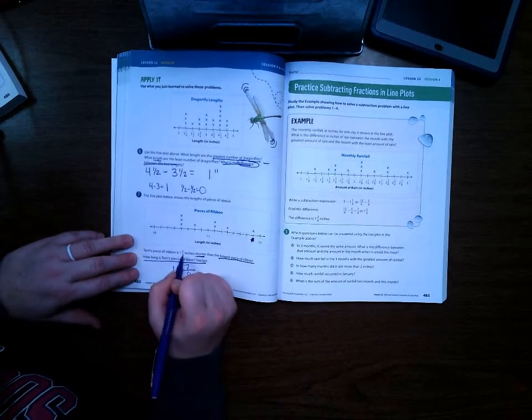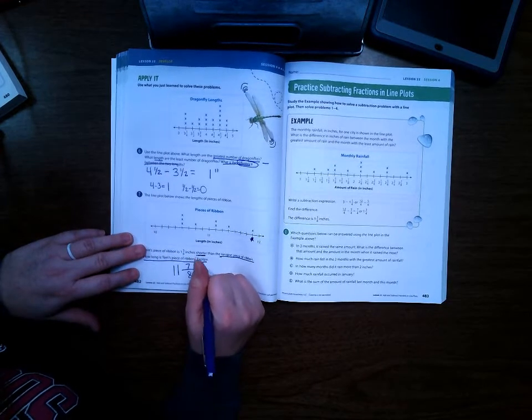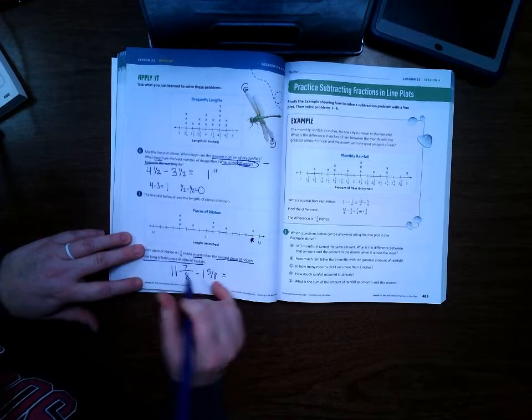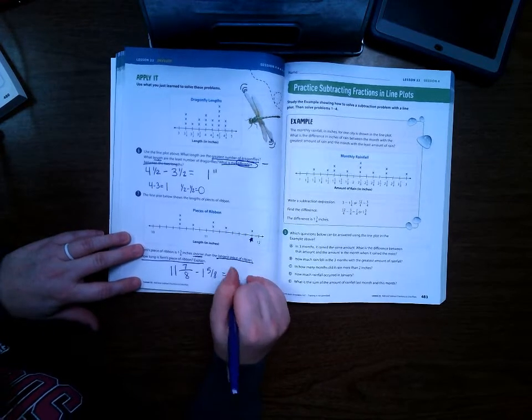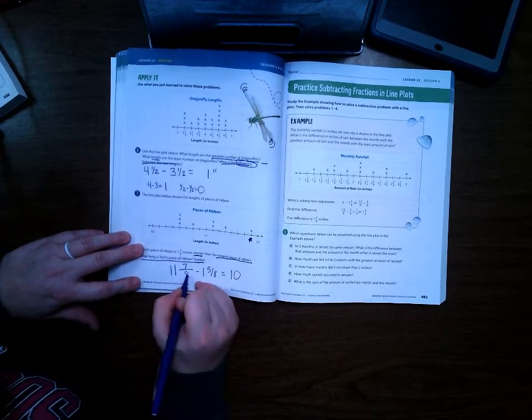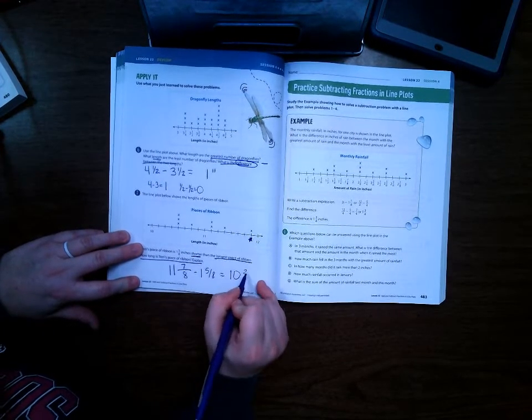But it says that Terry's piece is 1 and 5/8 inch shorter, so we're going to minus 1 and 5/8. 11 minus 1 is 10. 7/8 minus 5/8 is 2/8.